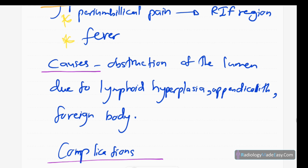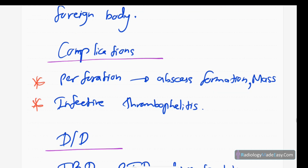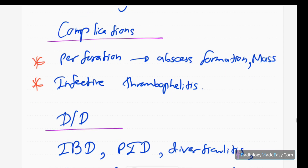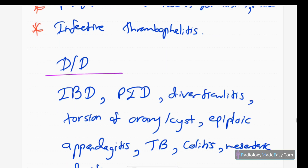The commonest cause of obstruction is lymphoid hyperplasia, followed by appendicolith and foreign bodies. Complications include perforation, which leads to abscess formation and sometimes appendicular mass formation. Infective thrombophlebitis in the portal vein can also be seen, as well as free intraperitoneal air or pneumoperitoneum.